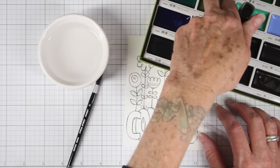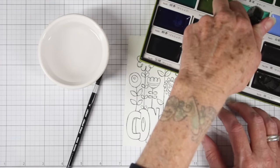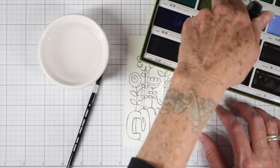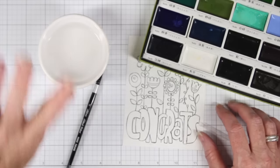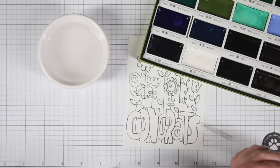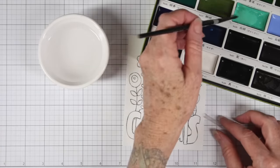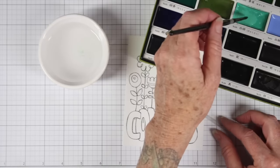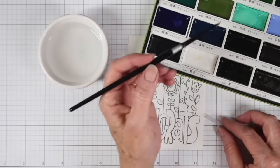Starting with my Kuretake watercolors, I'm going to spritz down the little palette of color with my water bottle. You could also load up a brush with water and just dip it in, but the main thing is to get those watercolors wet.